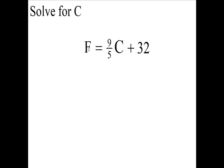Solve for C. F equals 9 fifths C plus 32. We want to get C all by itself.